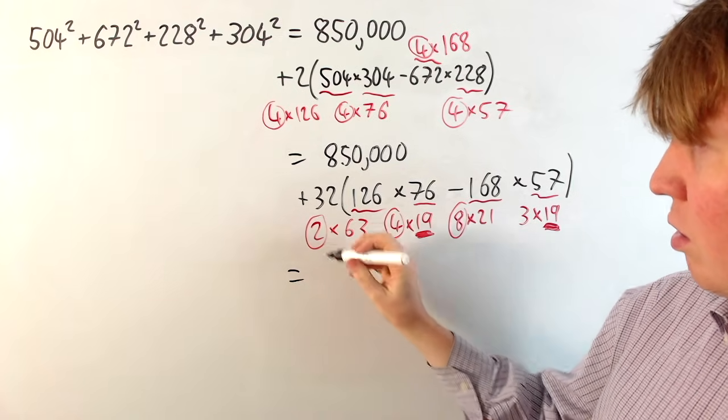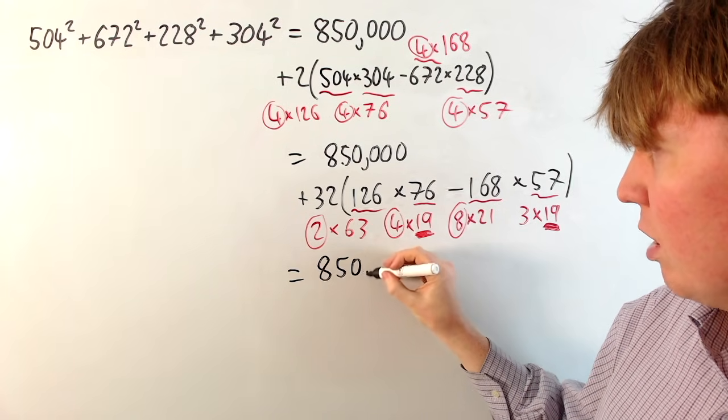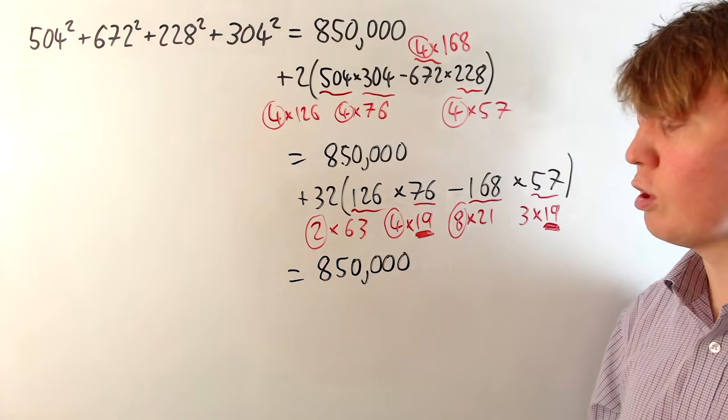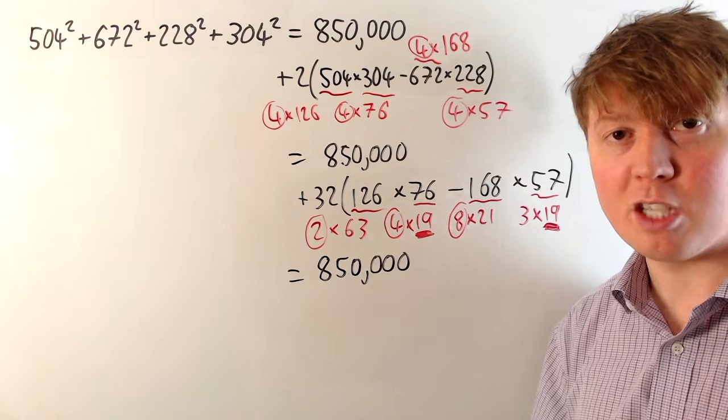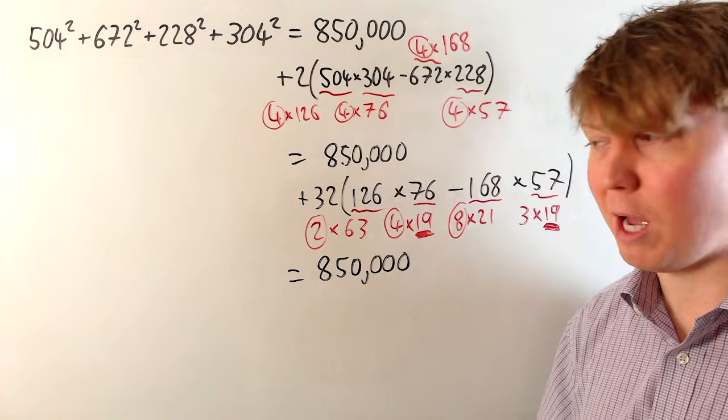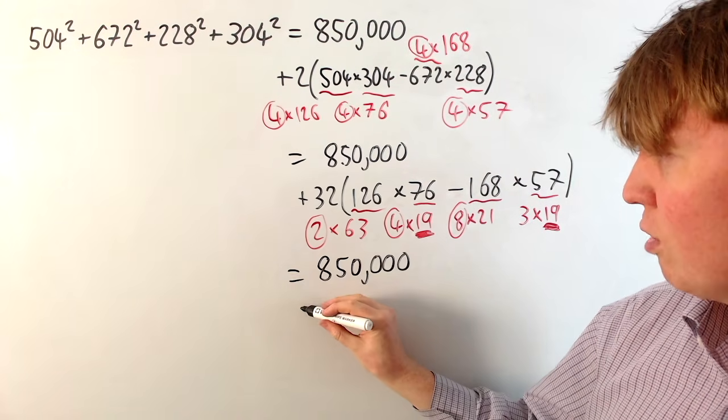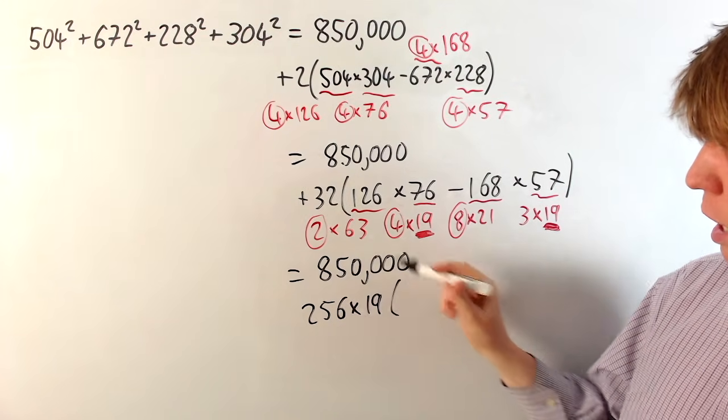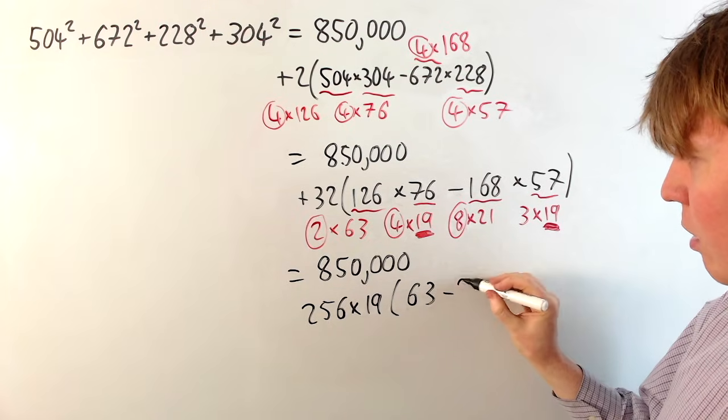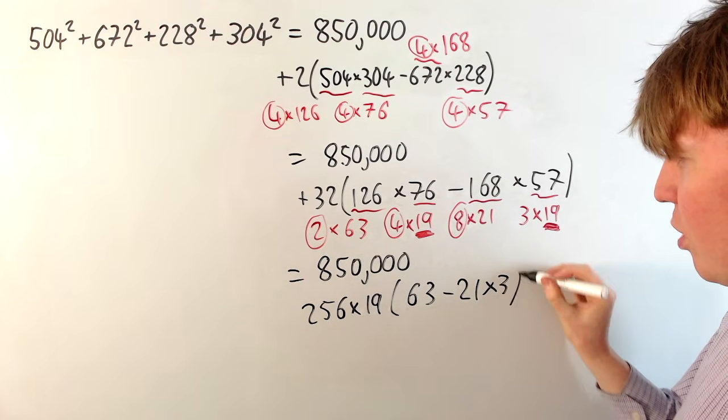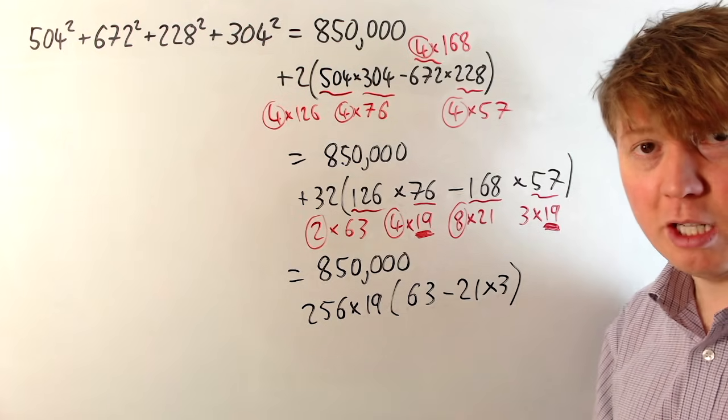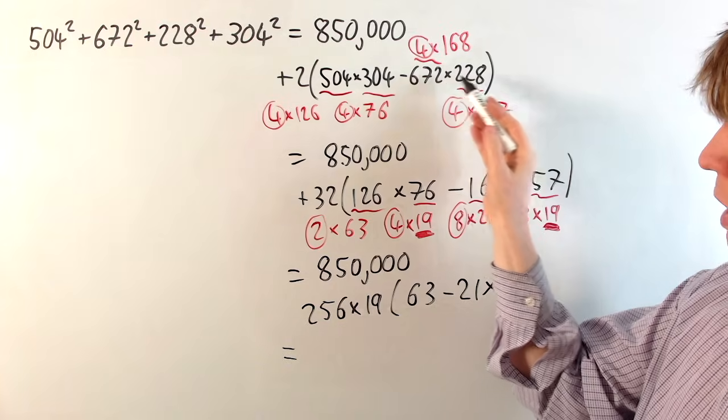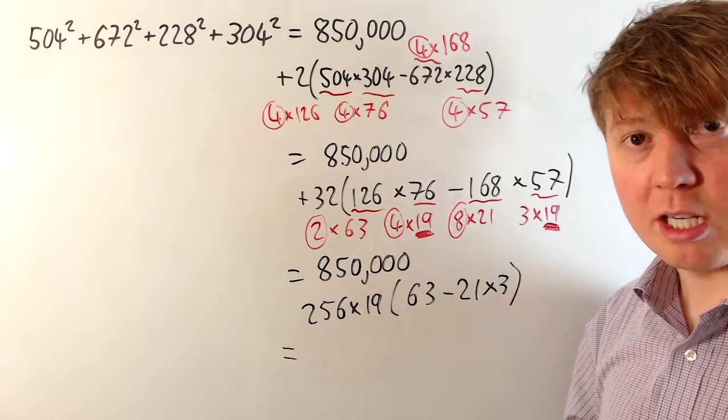So then our original expression is going to be, again, we've still got the 850,000. But then we've also got 32 times 2 times 4. So we can think of this as like 2 to the 5 times 2 cubed. So if you're familiar with your powers of 2, this is going to be 2 to the 8, or 256 times 19. And then all that's left is 63 minus 21 times 3. And of course, 21 times 3 is 63. So we've just got 0 here. So this turns out that this product minus this product here is all just equal to 0.